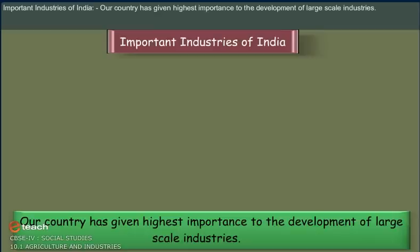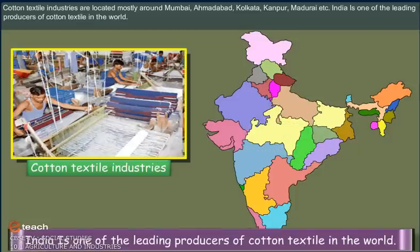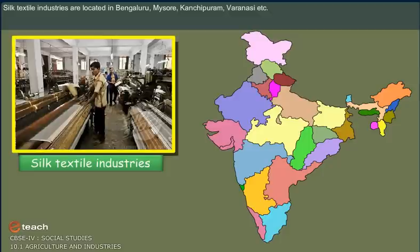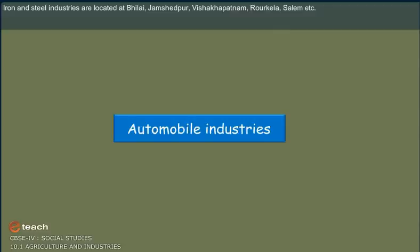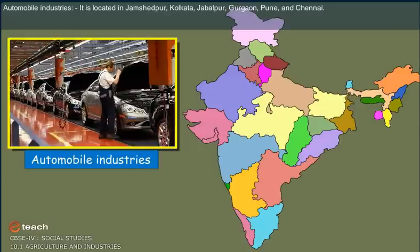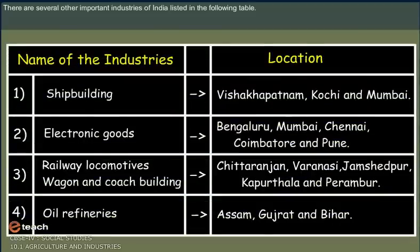India has given highest importance to the development of large-scale industries. Cotton textile industries are located mostly around Mumbai, Ahmedabad, Kolkata, Kanpur, Madurai, etc. India is one of the leading producers of cotton textiles in the world. Silk textile industries are located in Bangalore, Mysore, Kanchipuram, Varanasi, etc. Iron and steel industries are located at Bhilai, Jamshedpur, Vishakhapatnam, Rourkela, Salem, etc. Automobile industries are located in Jamshedpur, Kolkata, Jabalpur, Gurgaon, Pune, and Chennai.